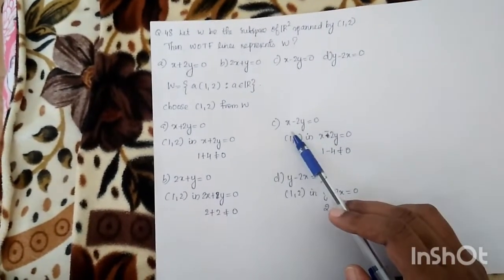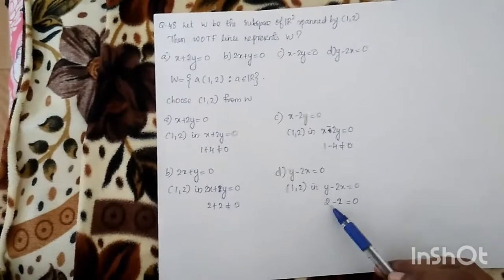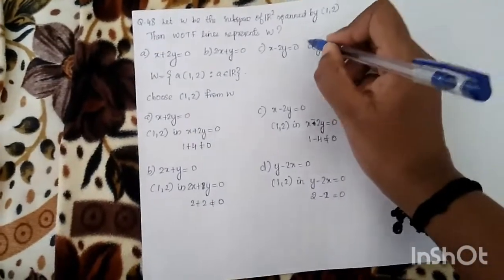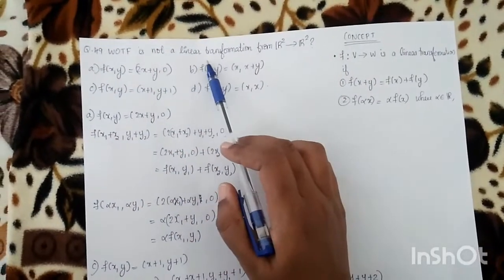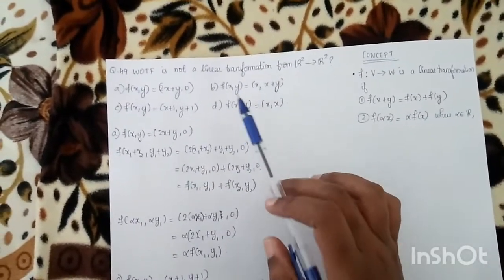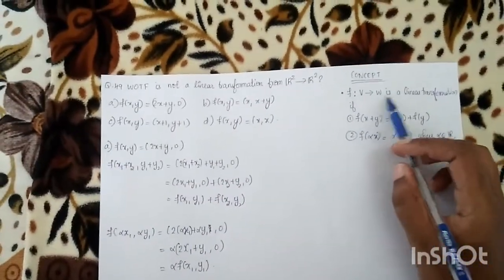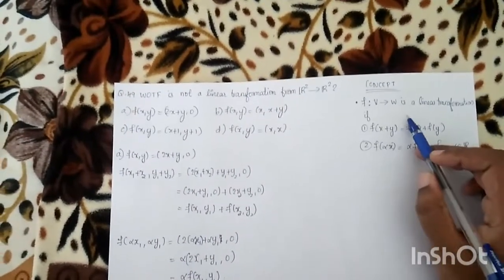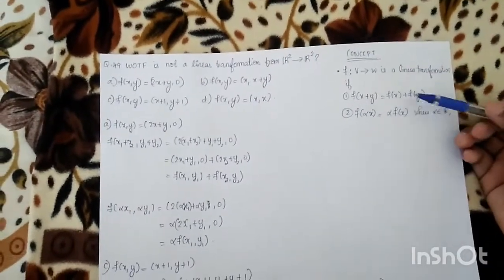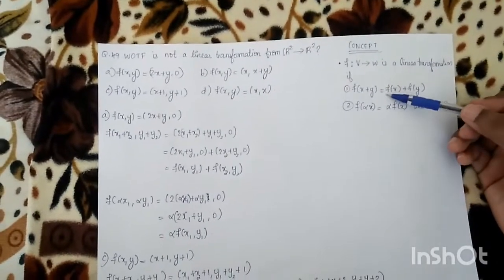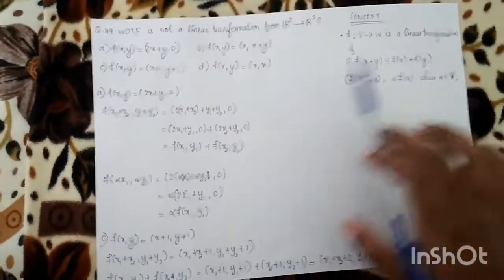Next question: which of the following is NOT a linear transformation from R² to R²? Recall the concept: if f from V to W is a linear transformation, we must satisfy two conditions. First, f(x+y) = f(x)+f(y). Second, f(αx) = α·f(x) for α in R.